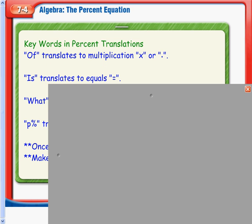Is has always translated into being equals. So translating to equals, now we have a multiplication and an equals. So of is multiplication, is is equals.